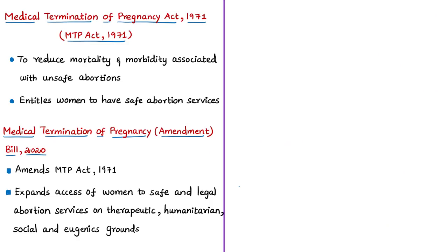First, we need to understand what abortion or termination of pregnancy means. In simple words, abortion is a procedure to end pregnancy using medicine or surgery, involving removal of the embryo or fetus and placenta from the uterus. The procedure must be done by a licensed healthcare professional. India has legislation for regulating this: the Medical Termination of Pregnancy Act of 1971.